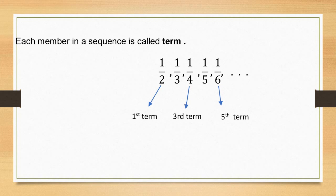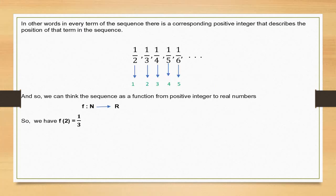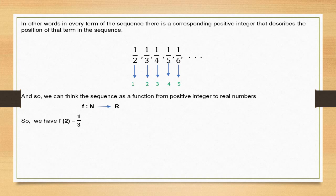Each member in a sequence is called a term. The first term in this sequence is one-half, the third term is one-fourth, and one-sixth is the fifth term of this sequence. In other words, in every term of the sequence, there is a corresponding positive integer that describes the position of that term. For example, the first term is one-half, the second term is one-third, the third term is one-fourth, the fourth term is one-fifth, the fifth term is one-sixth, and so on.